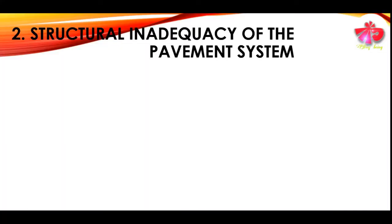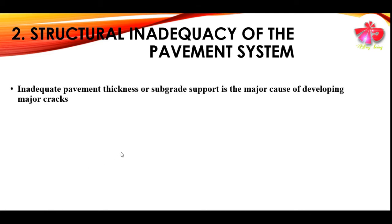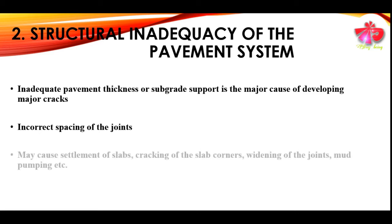The second cause of rigid pavement failure is structural inadequacy of the pavement system. This is caused due to inadequate pavement thickness or inadequate sub-grade support, which are major causes of structural failure developing major cracks. Incorrect spacing of joints may also result in failure, causing settlement of slabs, cracking of slab corners, widening of joints, and mud pumping.